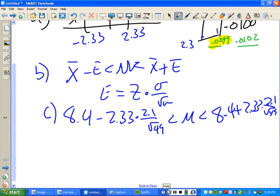The square root of 49 is 7. 2.1 divided by 7 is 0.3. 0.3 times 2.33 is 0.699. And if you take 0.699 and subtract it from that, you will get 7.701. It's actually 7.701.